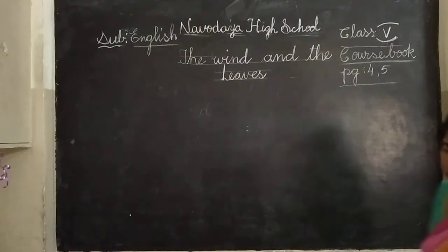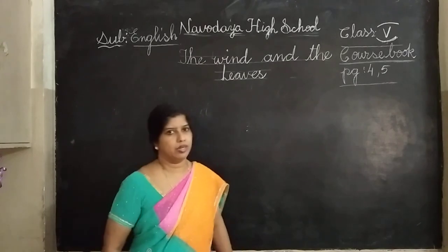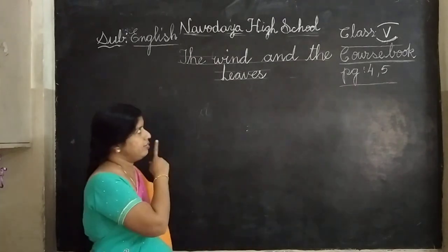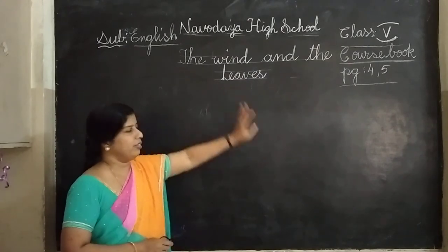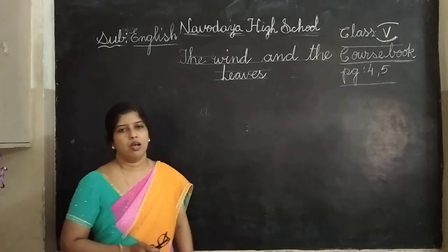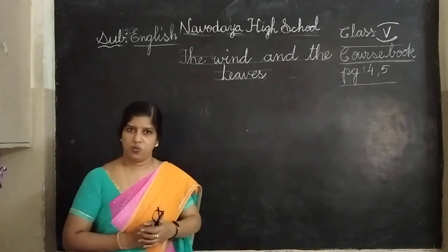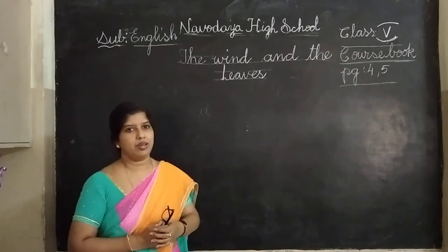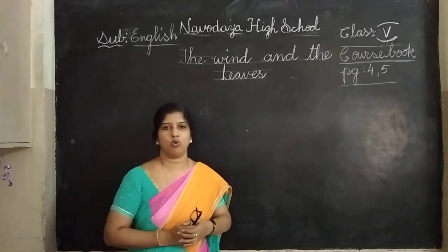Good morning class children. Today we are going to start Volume 2 children. Let us learn the course book lesson: 'The Wind and the Leaves.' It is a poem. The poem describes the relation between the wind and the leaves. Let us learn it, children. Turn to pages 4-5 from your course book.